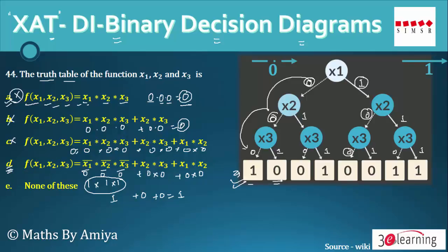Now we have to check 0. What do we mean by 0? If we apply 0, 0, 1, means x1 is 0, then 0 and 1. So we can say 0 complementary into 0 complementary into 1 complementary plus x2 plus x3, that is 0 and 1, 0 and 1 plus 0 into 0. So we can say the complementary is 1 into 1 into 0 plus 0 plus 0, so total outcome is 0. So yes, again we have the right outcome with the help of D.